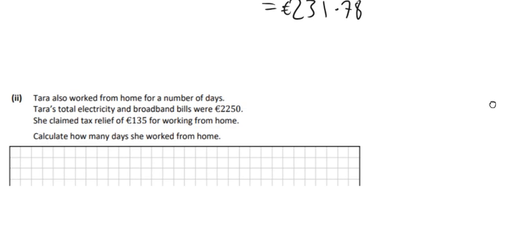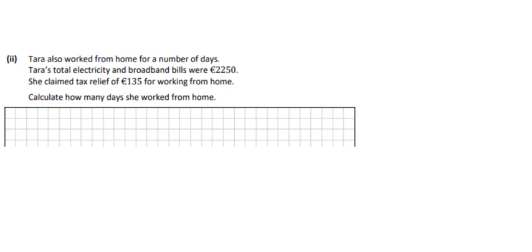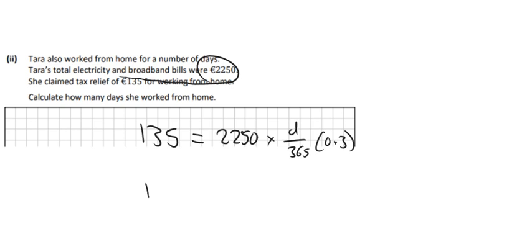And then we added power 2 actually as well. So again, it's filling into the formula up there. But now it's like it tells you the answer. It tells you she gets 135 in tax relief. And we have to figure out what D is, how many days she worked from home. So we put everything else in. So 2,250 is the amount of her bills. It says in the question. Multiplied by D over 365 times 0.3. And now we're just moving things to the other side. So I'm going to do 135 divided by 2,250 and 0.3. I'm moving both of them over to the other side together there, dividing by both of those. So I can do that.